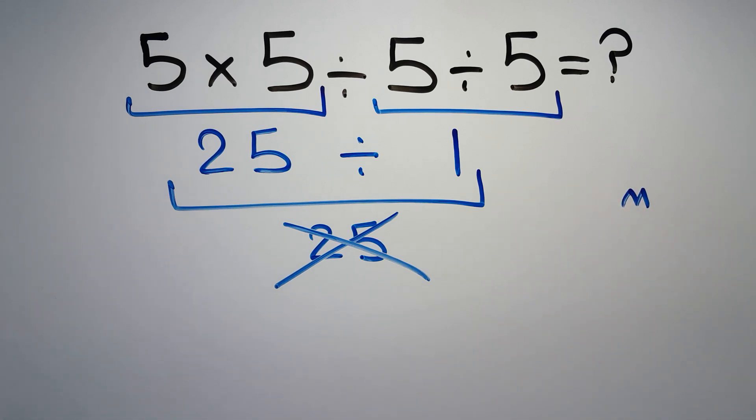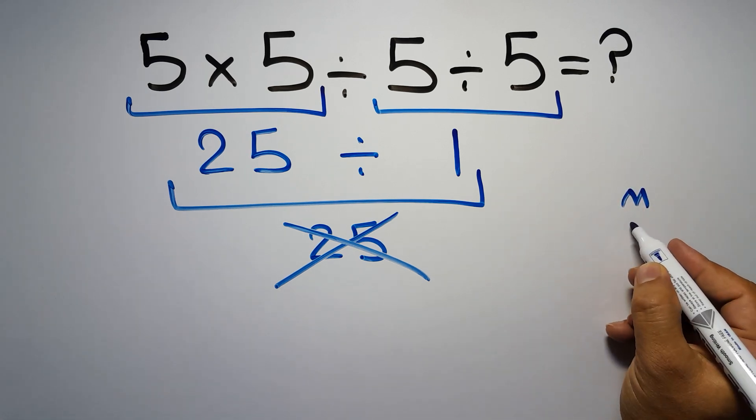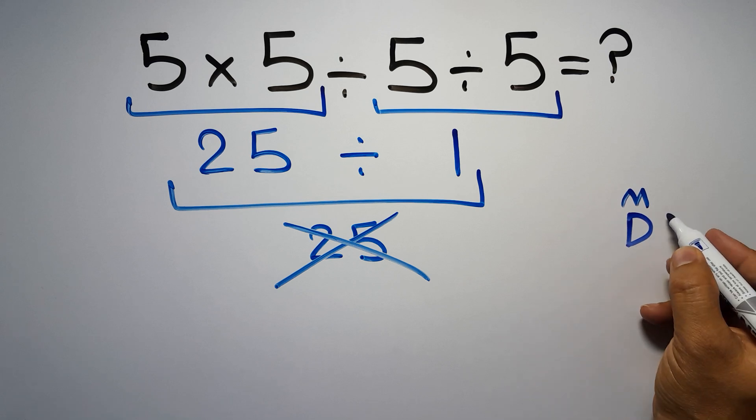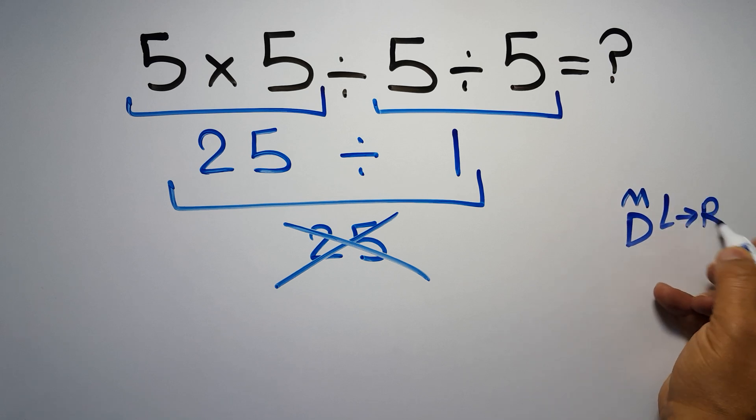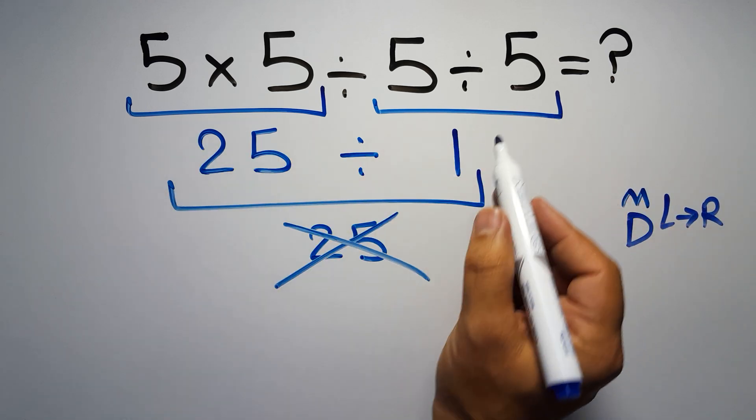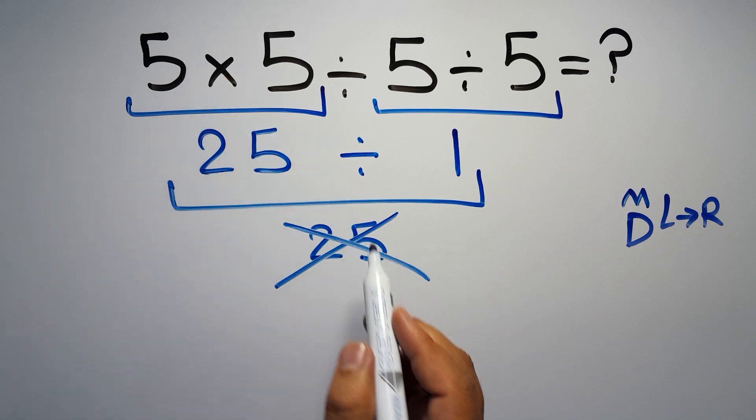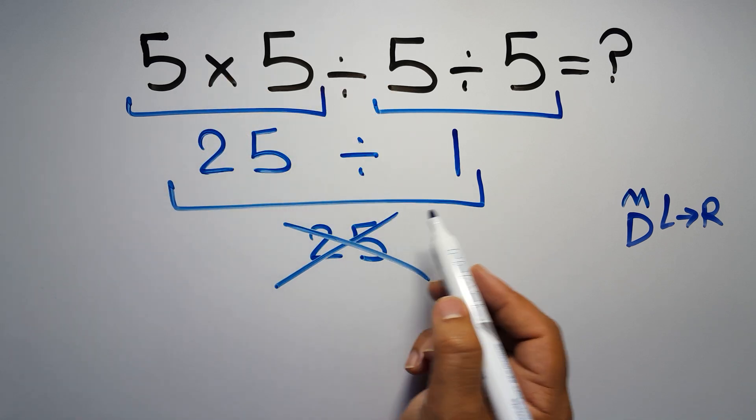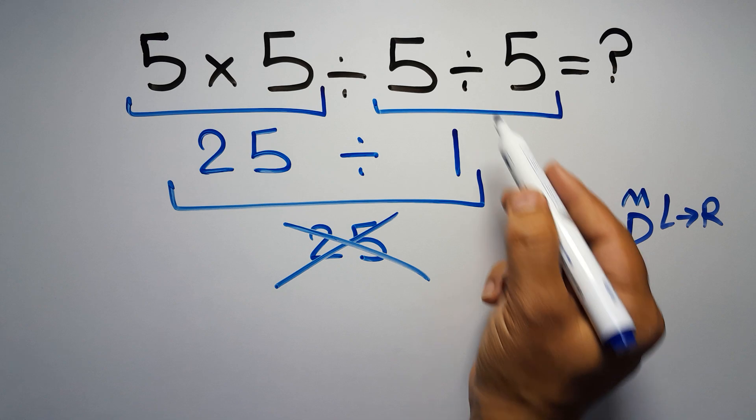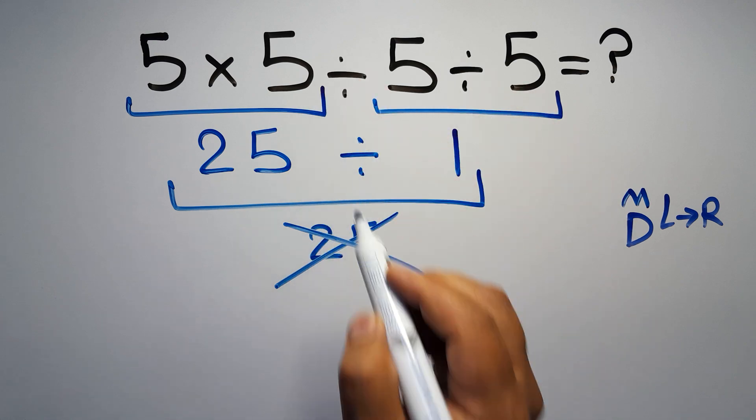Multiplication and division have equal priority and we have to work from left to right. So here first we have to do this multiplication, then this division, and finally this division. If we do this division before this division, it is wrong.